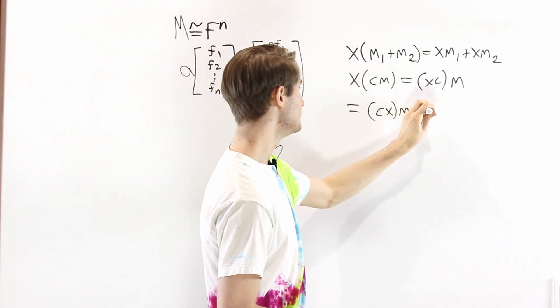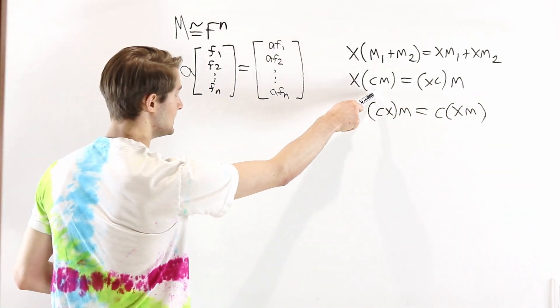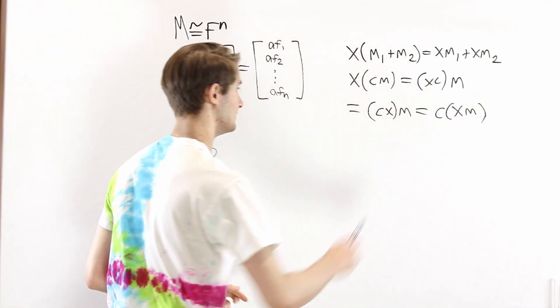This is going to be equal to cx times m. And then again using associativity, we get c times xm. So x times cm equals c times xm.